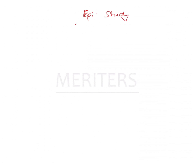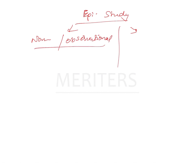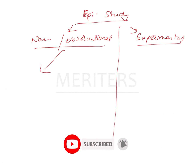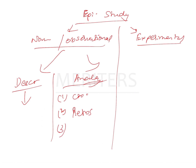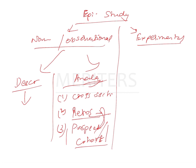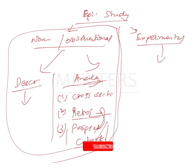Epidemiology studies are divided into two: non-experimental or observational, and experimental. Observational studies are further classified into descriptive and analytical. Descriptive simply describes disease with no interventions. Analytical includes retrospective, cross-sectional, and prospective studies — which are cohort or cause-to-effect studies.